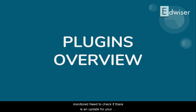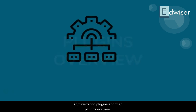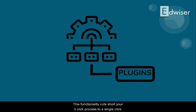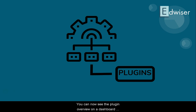You need to check if there is an update for your plugin. Normally you would have to go to Site Administration, then Plugins, then Plugins Overview. This functionality cuts that 3-click process down to a single click. You can now see the plugin overview on your dashboard itself and keep a better tab on all your plugins. So go and check out these features on your own today.